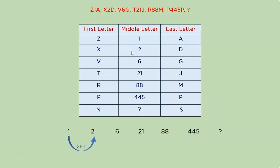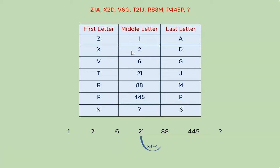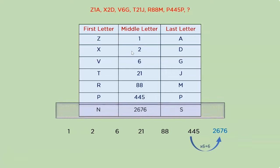For the middle numeric part, each term is multiplied and added to the previous with an increment of 1: 1 × 1 + 1 = 2; 2 × 2 + 2 = 6; 6 × 3 + 3 = 21; 21 × 4 + 4 = 88; 88 × 5 + 5 = 445. The next term should be 445 × 6 + 6 = 2676. That means the answer is option 2.